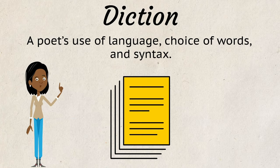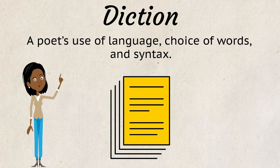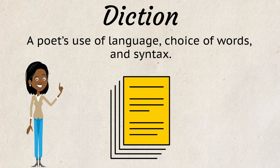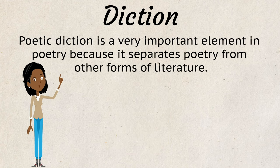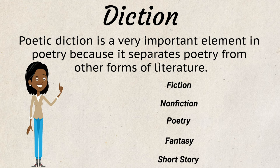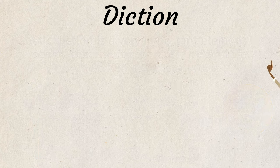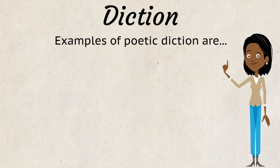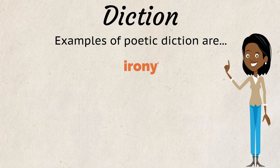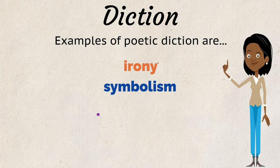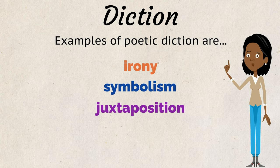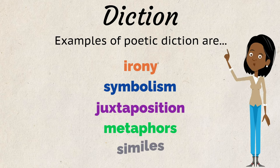Diction is a poet's use of language, choice of words, and syntax. Poetic diction is a very important element in poetry because it separates poetry from other forms of literature. Examples of poetic diction are irony, symbolism, juxtaposition, metaphors, and similes.